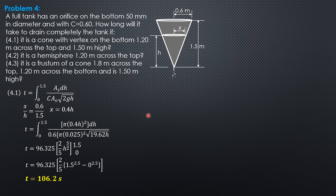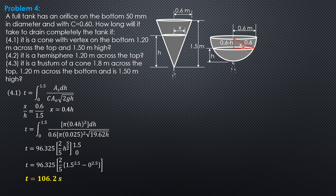Next, the hemisphere. 1.2 meters across the top, so the radius is 0.6 meters. The depth is also 0.6, the radius. The radius of area S is the variable X, which is changing. From the figure, X² = 0.6² − (0.6 − H)². Simplifying: X² = 1.2H − H².